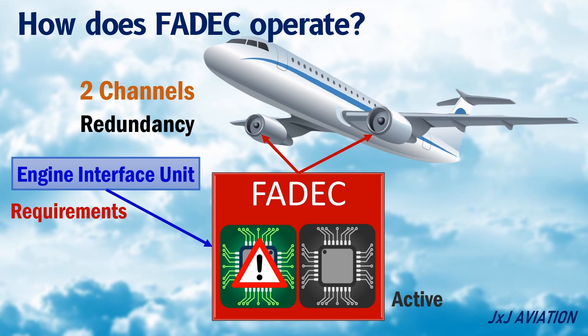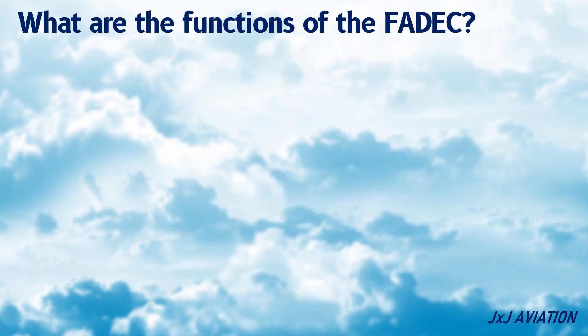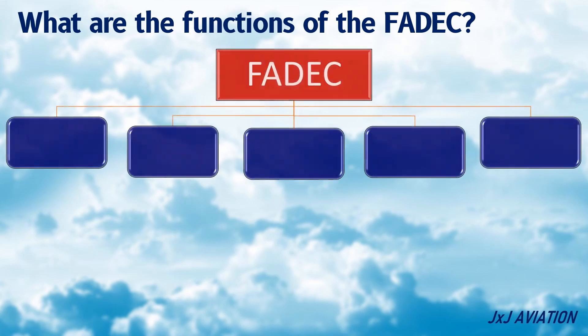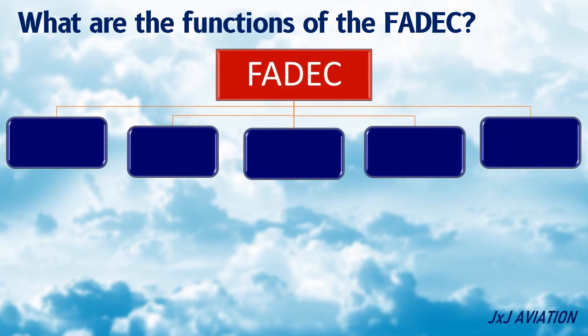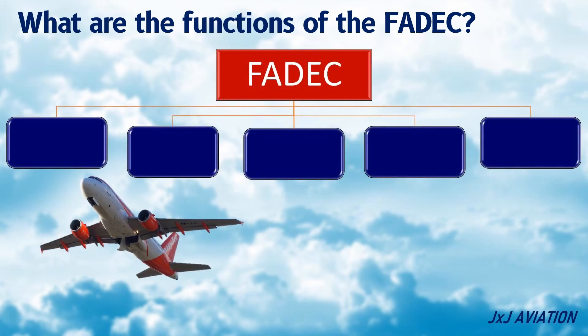So let's look at the different functions of the FADEC. The FADEC controls different functions of the engine. Engines are mainly responsible for producing thrust. The FADEC controls the fuel flow to the engine during all the flight phases.